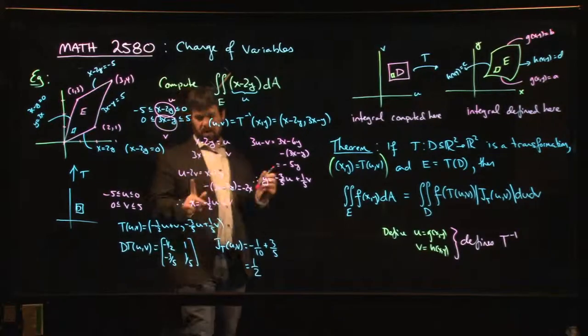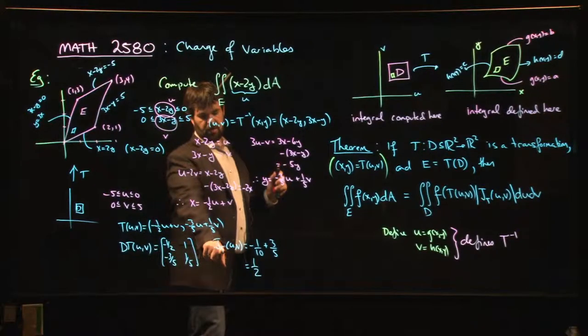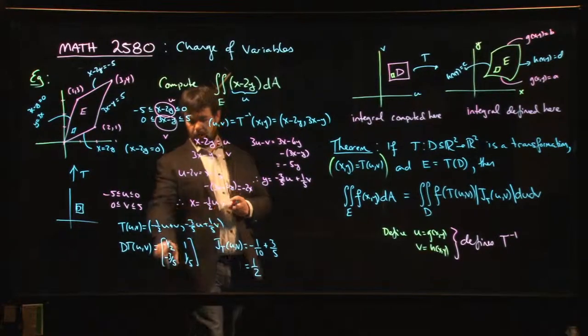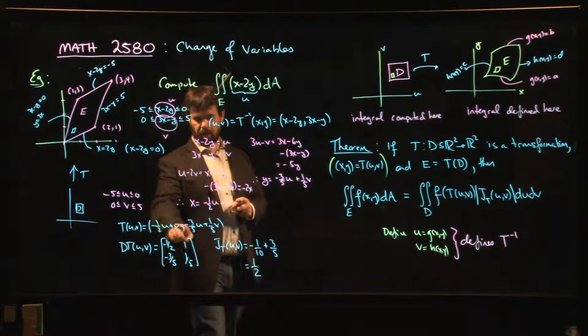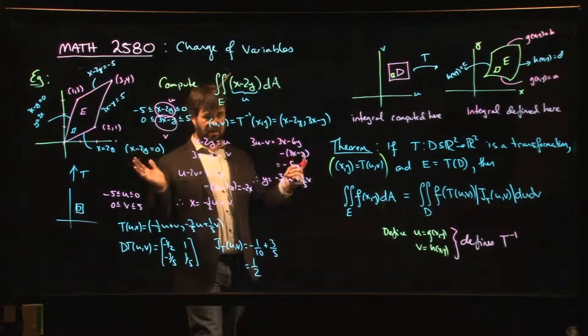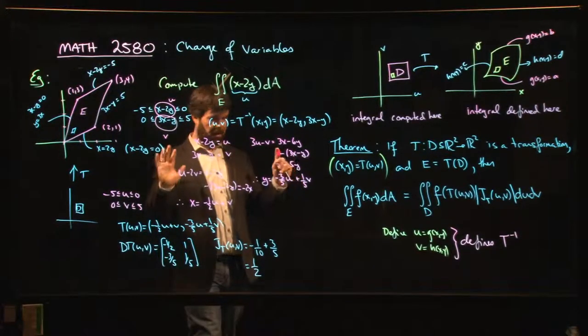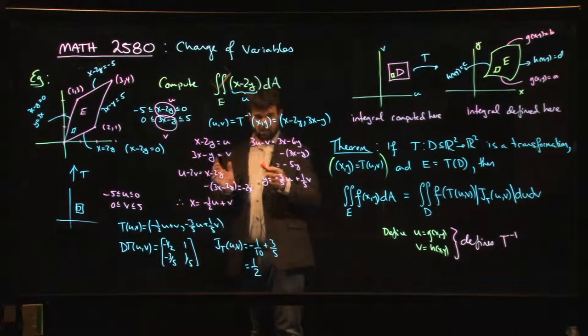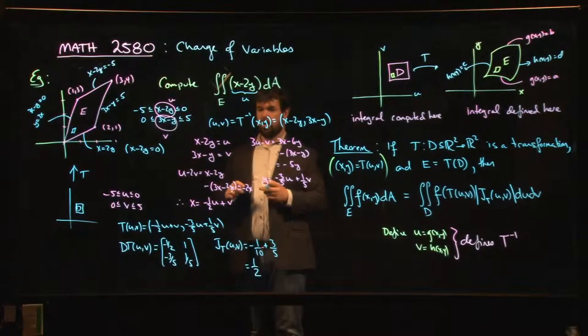By the way, remember that the determinant doesn't care about transposes, so don't worry about whether you do the u's going down and the v's going down, or do the u's go across and the v's go across. You're going to get the same answer either way.